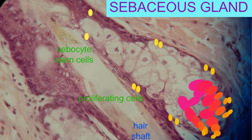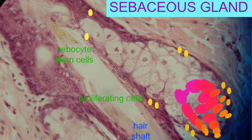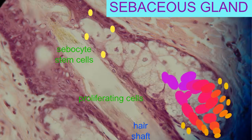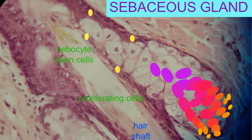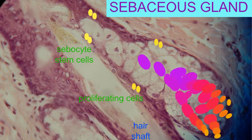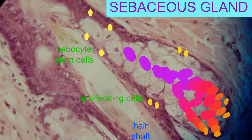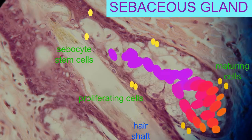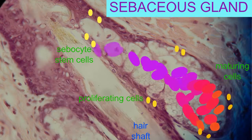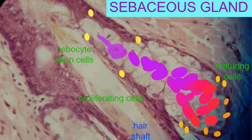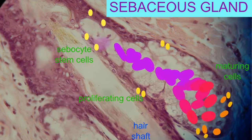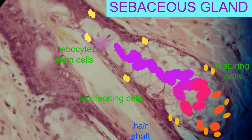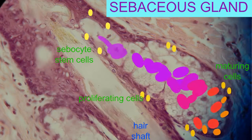These then mature as they enter the interior of the gland and begin to accumulate lipids. While keratinocytes can synthesize lipids such as triglycerides, free fatty acids, and cholesterol,